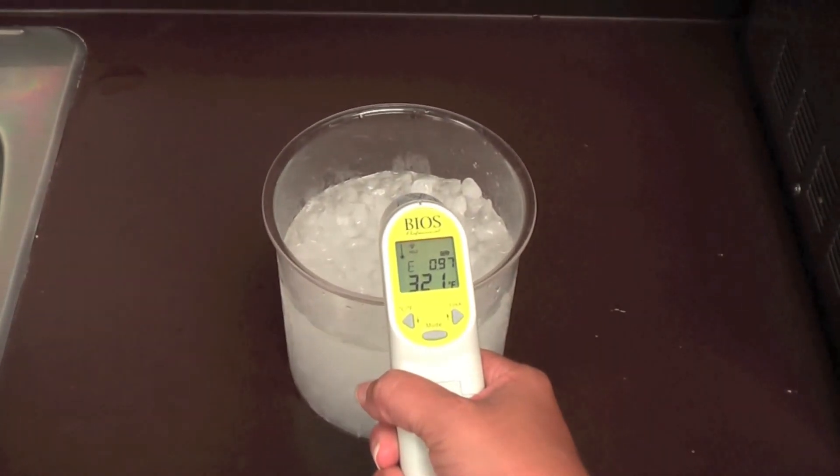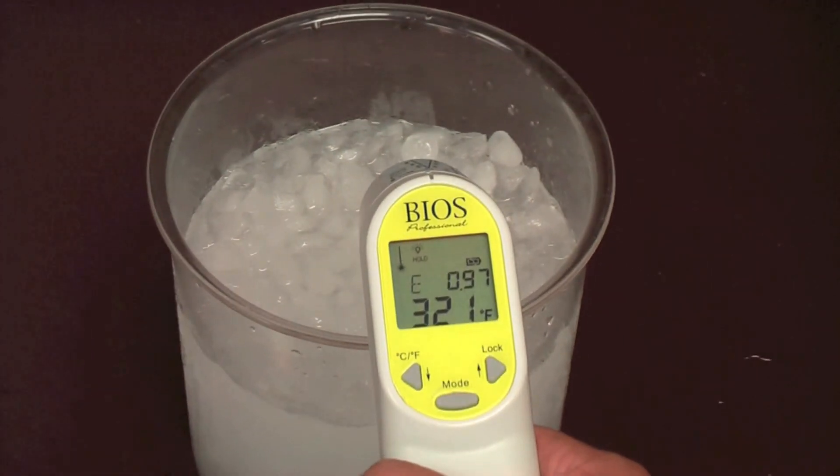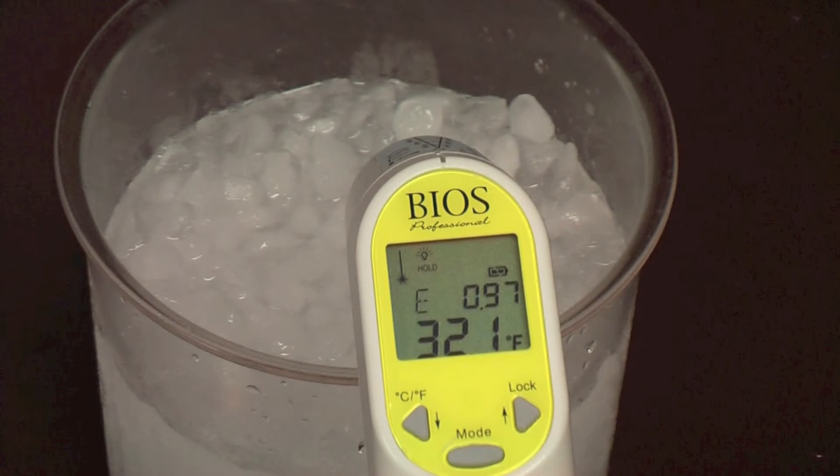Once the reading has stabilized, you should be at 0 degrees Celsius or 32 degrees Fahrenheit. This indicates that your infrared is still within calibration.